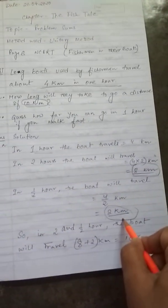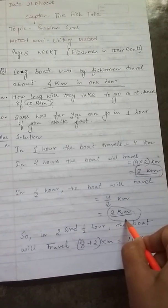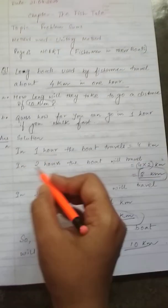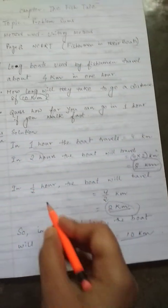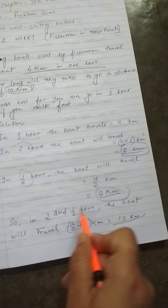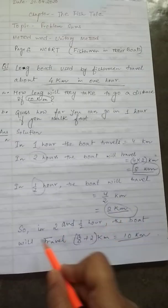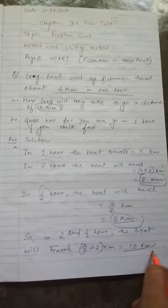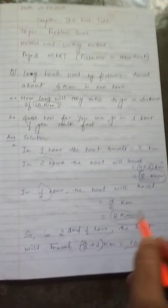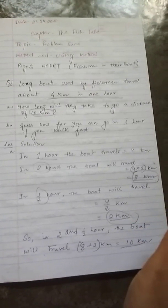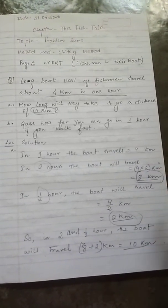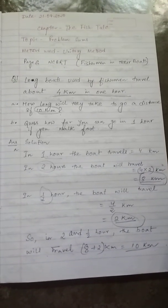So 8 km and 2 km when we add we get 10 km. And how much time is being taken? That is 2 hours and half hours. So in 2 and a half hours the boat will travel 8 plus 2 km, that is 10 km. And this question is the very first question in your NCERT textbook on page 6. So please note it down in your copy, in your previous copies, whichever copy has so many pages.